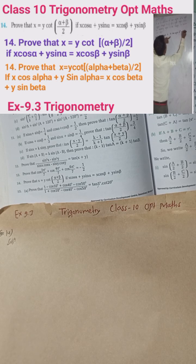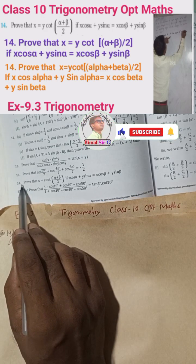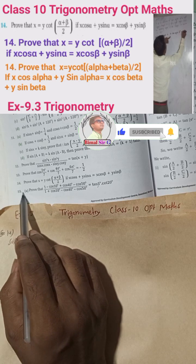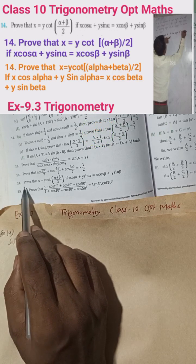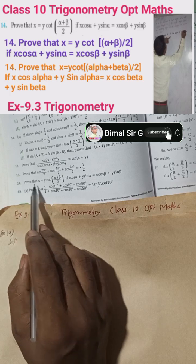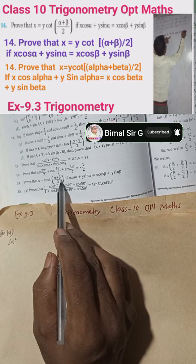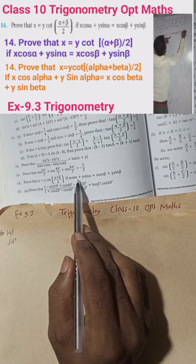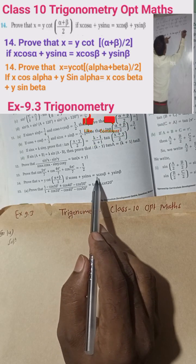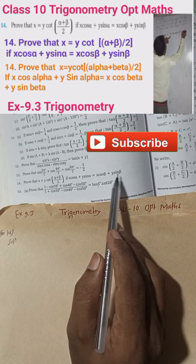Hi everybody, welcome back to Bimal Sarji's YouTube channel. Now I am going to solve question 14. Number 15a and 15b are already uploaded, you can check the playlist. Question 14: prove that x is equal to y·cot((α+β)/2), if x·cos(α) + y·sin(α) is equal to x·cos(β) + y·sin(β).